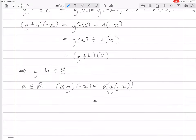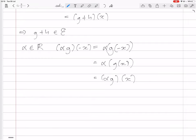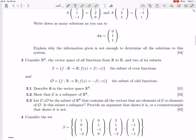Which then is the same as alpha times g of x, because g is even. Which this now is the same as alpha times g, the function times alpha of x. And so all this shows that alpha g is also in E. And that proves that E is a subspace, is a vector space.